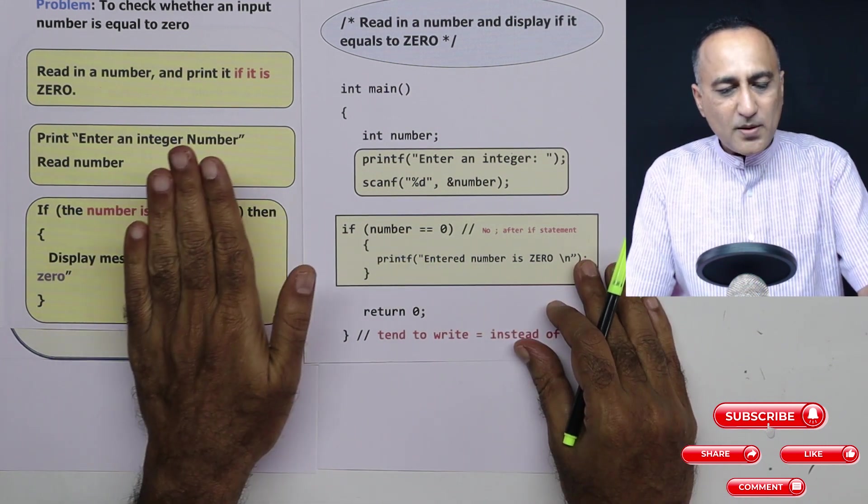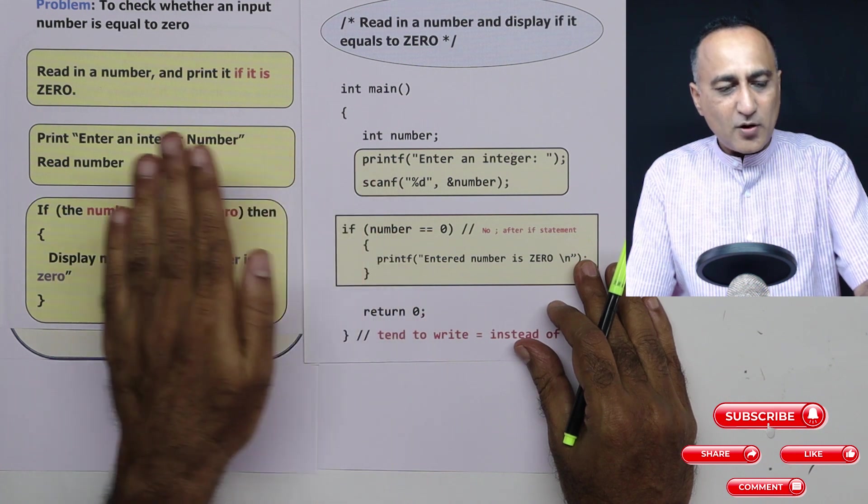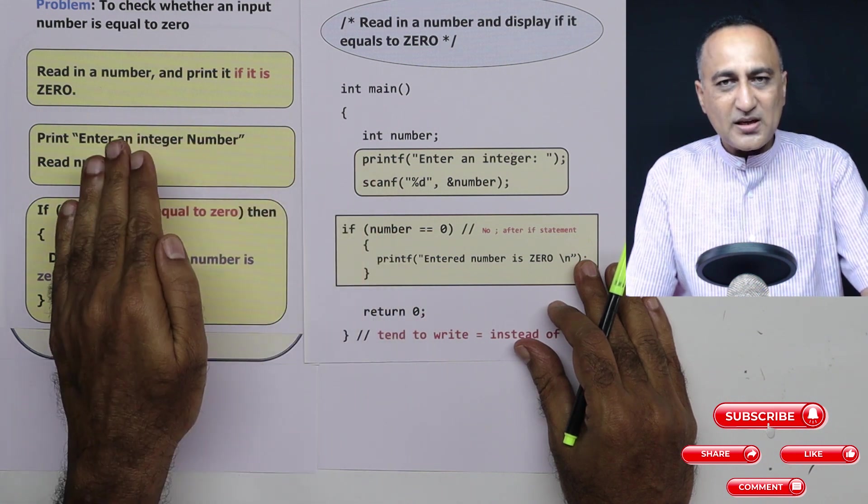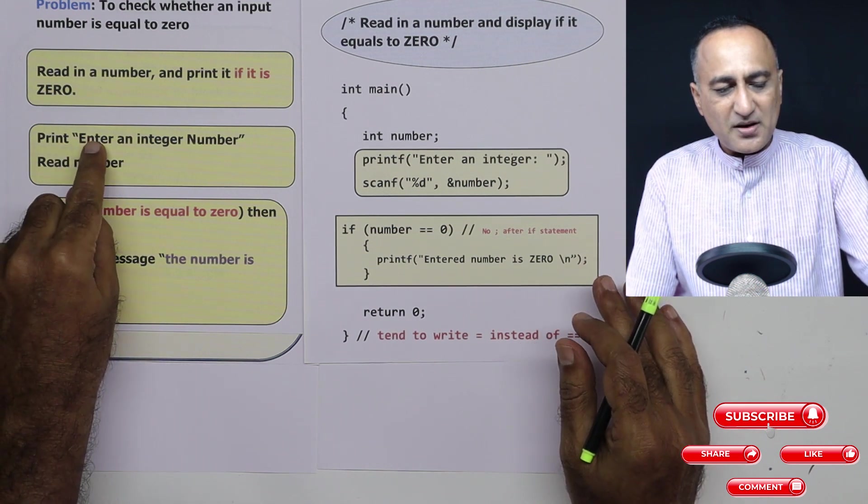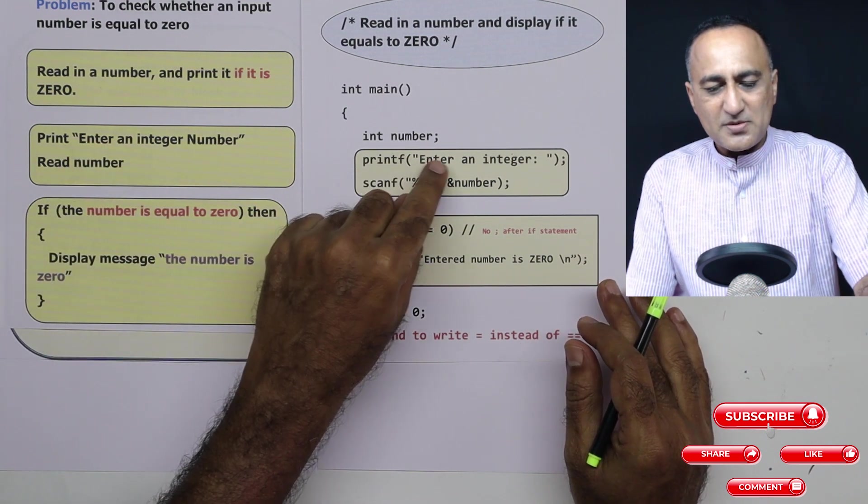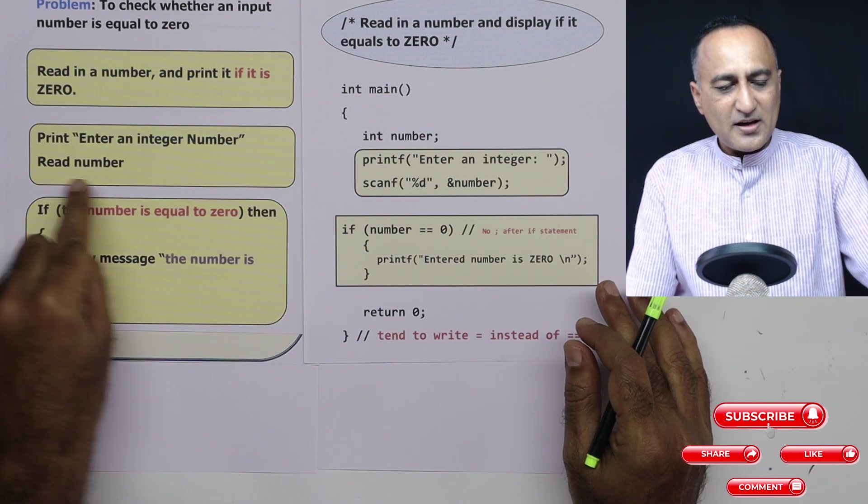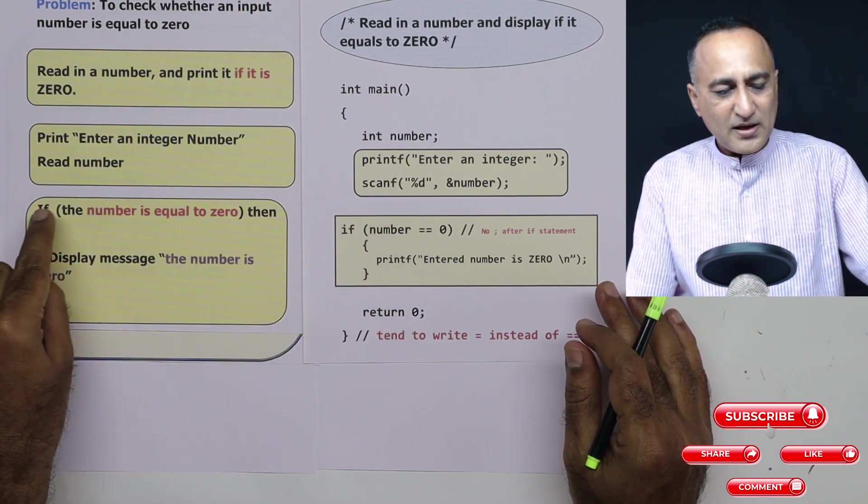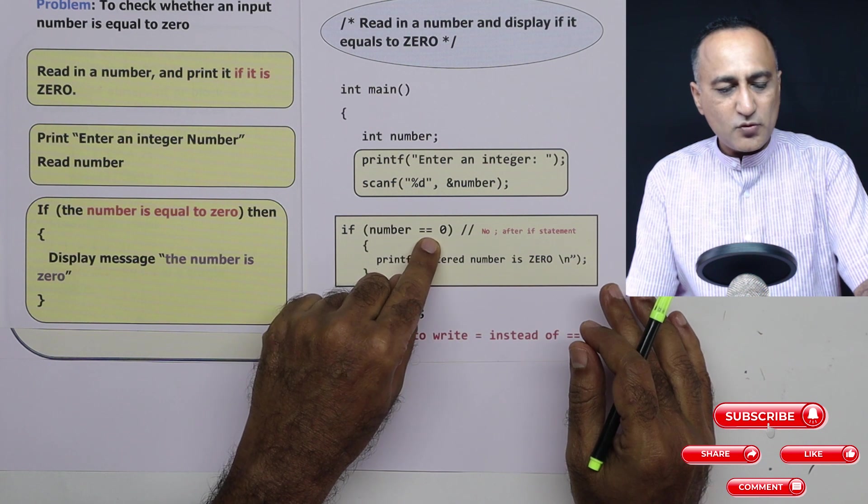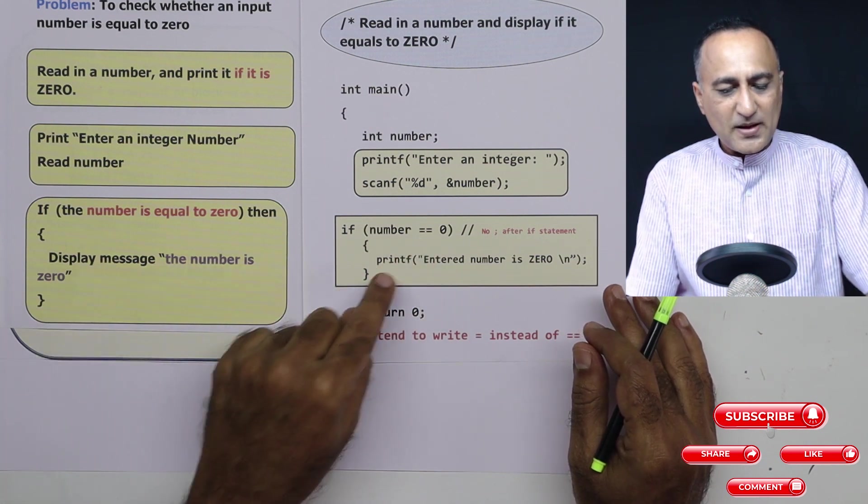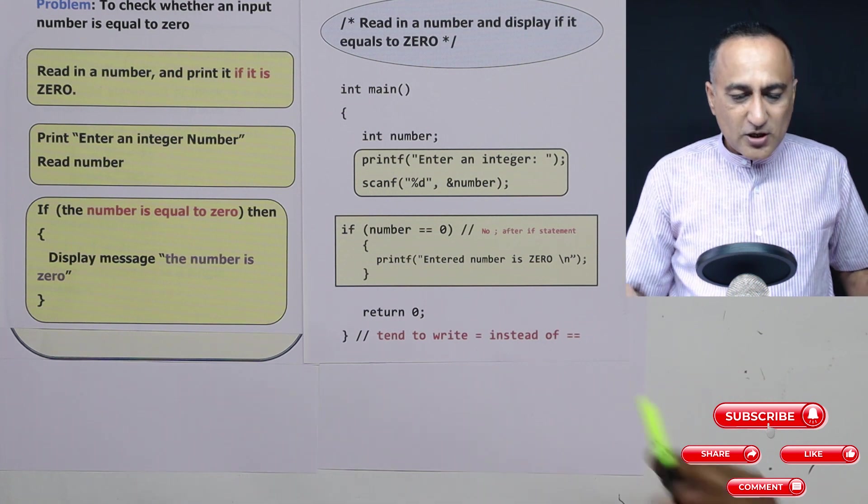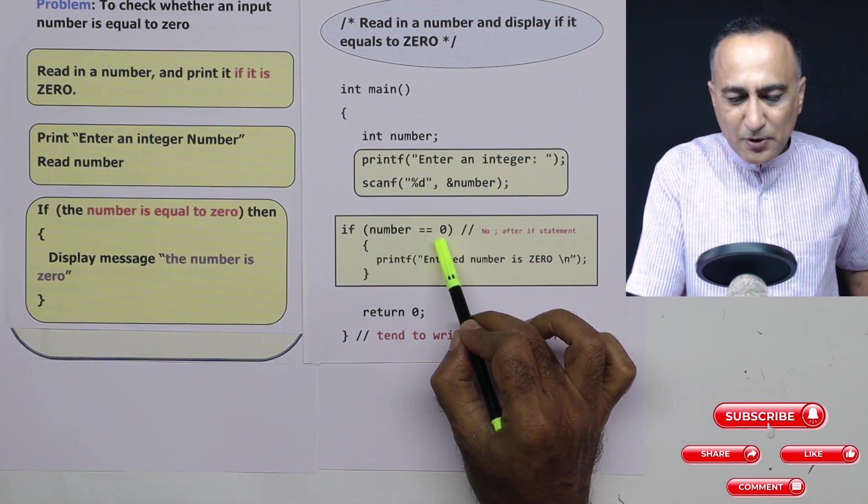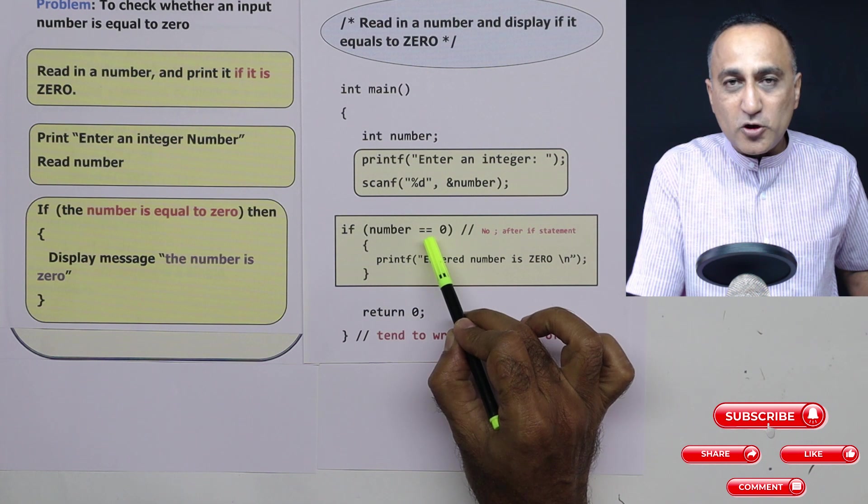So this should give you a very good comparison of how the logic between how we think in English and how we write a program works. So here if you see I have said print enter an integer, here also I am saying enter an integer. Read a number I am doing scanf. If I am doing if number is equal to zero instead of display I am having printf and I am printing the message.